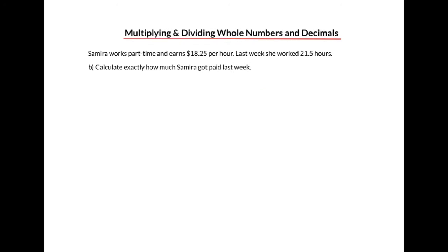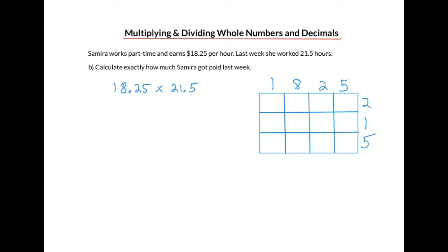Okay, let's move on to part B. Here, we want to calculate exactly how much Samira got paid last week. So let's pull out the numbers. She gets paid $18.25 per hour. And she worked 21.5 hours. So we need to multiply these two numbers. So we're going to try the box or table method of multiplication this time. What we do is we ignore the decimals for now. And I'll put the 18.25 at the top and the 21.5 along the side.